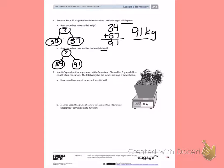Number 5. Jennifer's grandmother buys carrots at the farm stand. She and her three grandchildren equally share the carrots. The total weight of the carrots she buys is shown below. How many kilograms of carrots will Jennifer get?